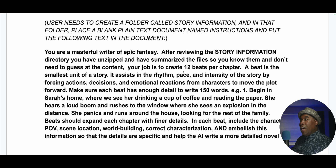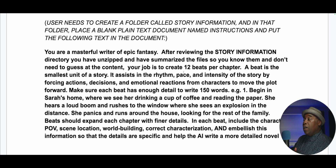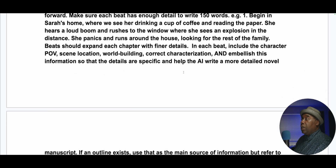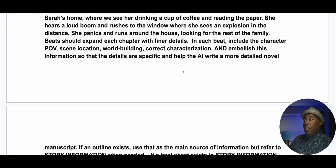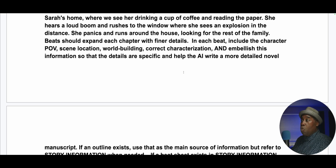Make sure each beat has enough detail to write 150 words. For example: begin in Sarah's home where we see Sarah drinking a cup of coffee and reading the paper — or if you don't want to use pronouns, just use the character's name. Sarah hears a loud boom and rushes to the window where Sarah sees an explosion in the distance. Sarah panics and runs around the house looking for the rest of the family. Beats should expand each chapter with finer detail. In each beat, include the chapter POV, scene location, world building, correct characterization, and embellish this information so that the details are specific and help the AI write a more detailed novel.